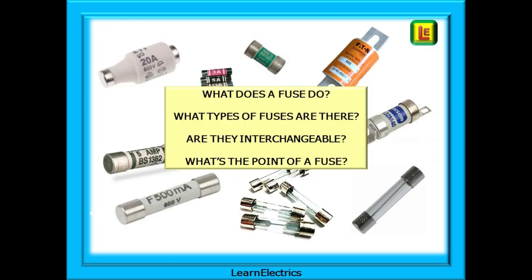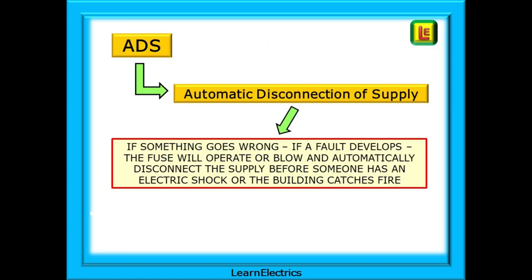Some frequent comments have included things like: what is a fuse, what does it do, what types of fuses are there and are they interchangeable, and just what is the point of a fuse — it's just a glass tube with a bit of wire, isn't it? When we install a fuse we are trying to achieve a certain response to faults in the circuit. We call this ADS, or Automatic Disconnection of Supply. If ADS has been correctly considered, then if something goes wrong in a circuit and a significant fault develops, the fuse will operate or blow and automatically disconnect the supply before someone has an electric shock or the building catches fire. That is ADS in a nutshell.